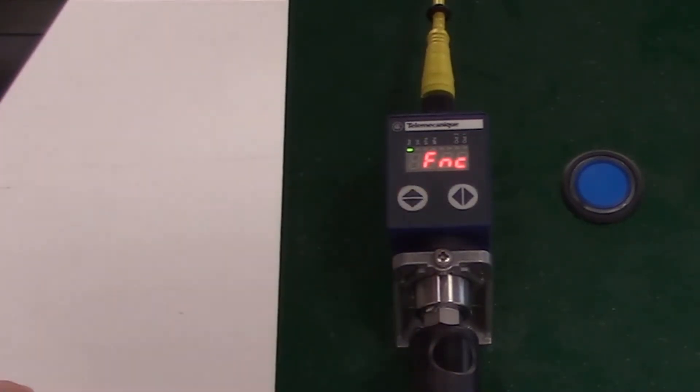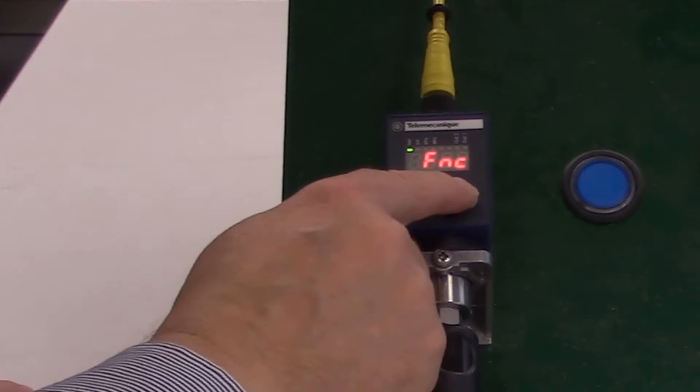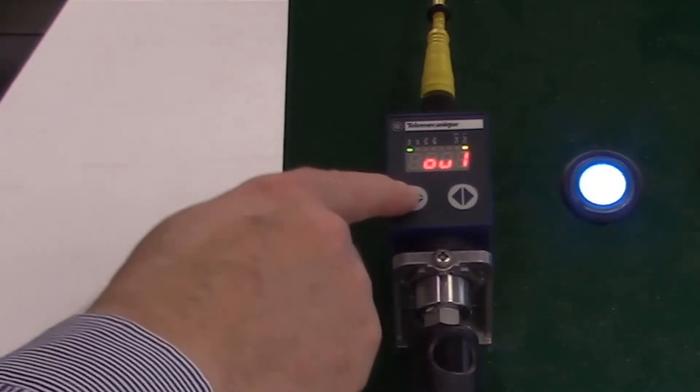Press the up down button to change from HNO to FNC, then press the left right button to confirm.